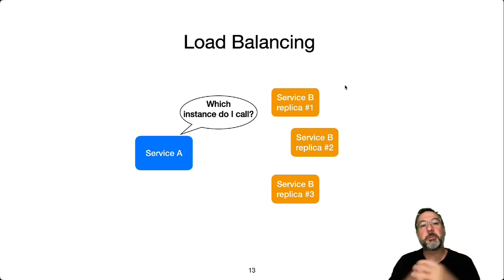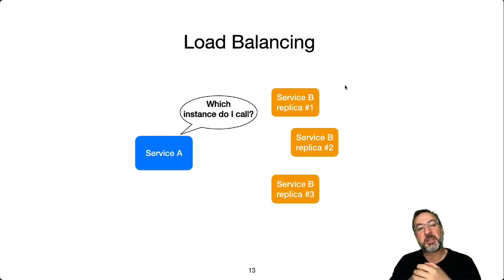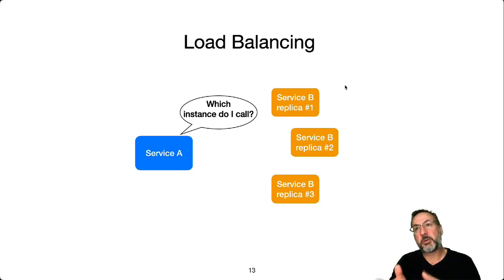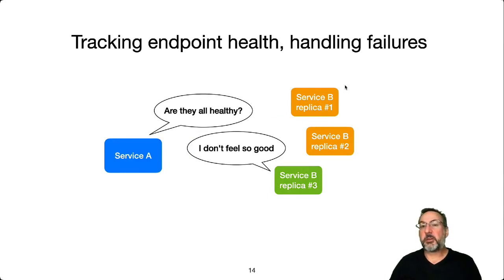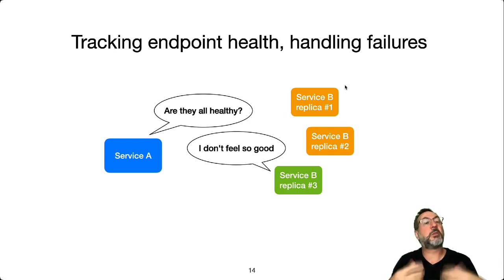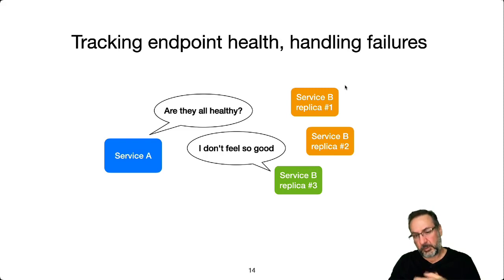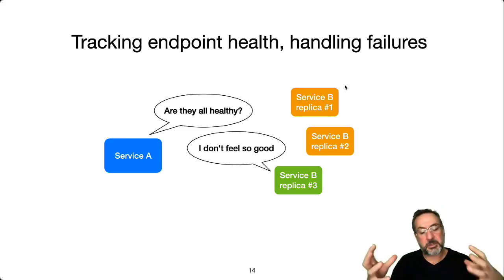What typically starts to happen is we add logic or a library — a kind of barnacle of code that becomes encrusted in Service A — necessary not for business logic, but to function in this environment where we need to load balance requests. When endpoints are not healthy, calls may fail, so we need to build in retry mechanisms — a bit more code inside our clients to deal with that possibility. In the monolith, we didn't have that problem because everything was in-process, not using the network for messaging.